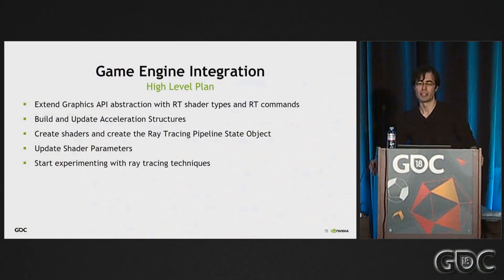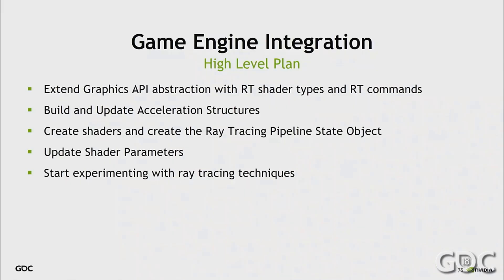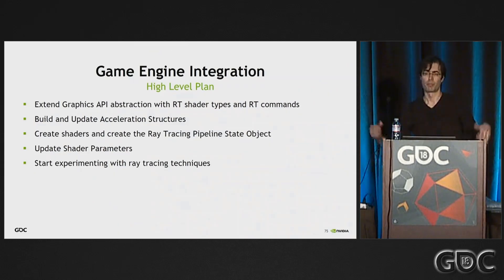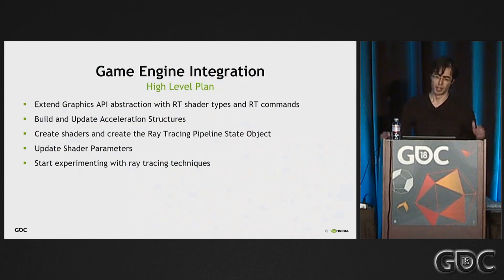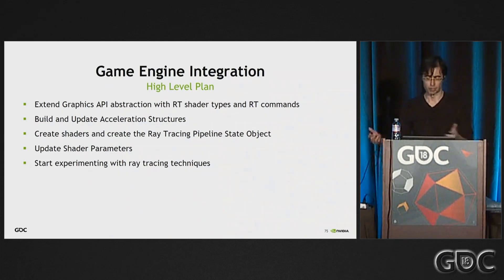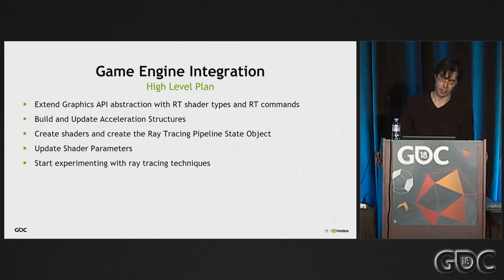I'd like to tell you a little bit about how we integrated ray tracing and give you a five-minute overview of the usual process. You'll probably start by extending your graphics API abstraction layer with new ray tracing shader types and ray tracing commands to build acceleration structures and do ray tracing dispatch commands in command queues. You'll have to figure out how to build all the ray tracing acceleration structures for all the geometry in your scene, and also how to update this in real time whenever geometry deforms or when objects move. You'll also have to create new shader types for ray generation and hit shaders, and combine them into a ray tracing pipeline state object. Then you have to update shader parameters as things change in the scene for every object. Once you have all of that done, that's where the fun begins — you can start experimenting with all these ray tracing techniques.